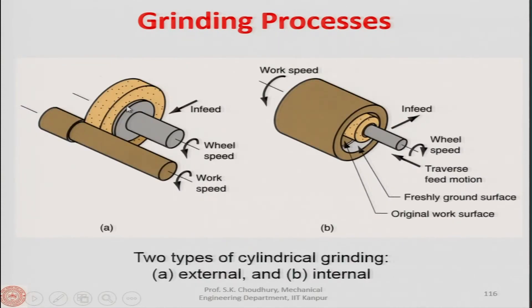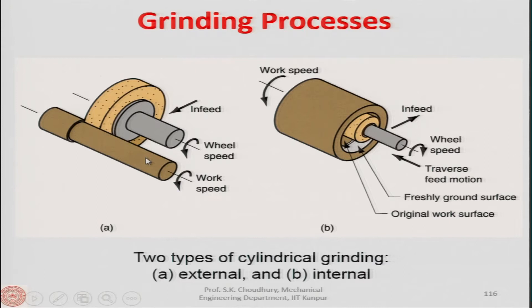In the pictorial view, for external cylindrical grinding the wheel rotates about its axis, which is parallel to the workpiece axis. The grinding wheel contacts the outer cylindrical surface, and in-feed is given to take the depth. For internal hole grinding, the grinding wheel is mounted on an arbor and rotates in the opposite direction to the workpiece; in-feed is given for depth.